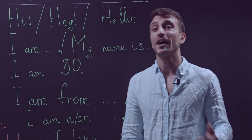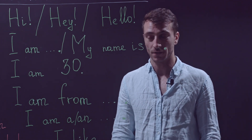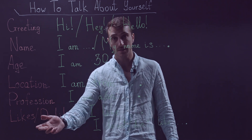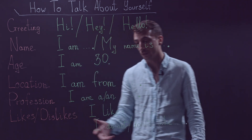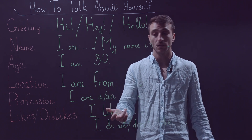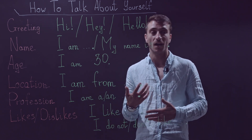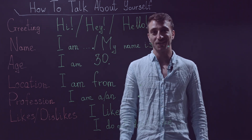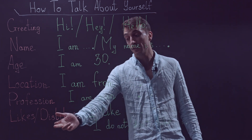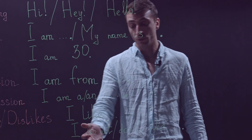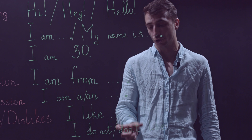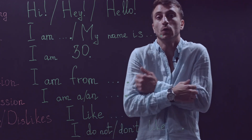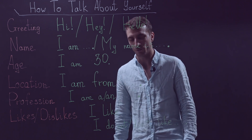The next thing you would like to share about yourself is the things that you like or dislike. For likes, you say: I like music. I like books. I like dancing, and other things as well. For dislikes, you could say 'I do not' or, keeping it short, 'don't' — I don't like cold. Actually, I really don't like it.